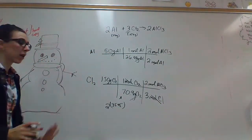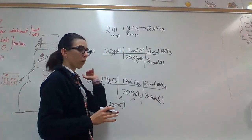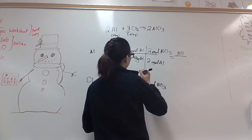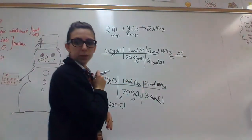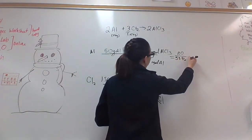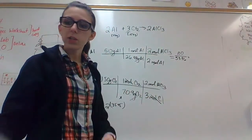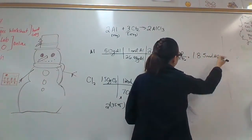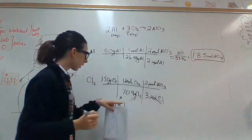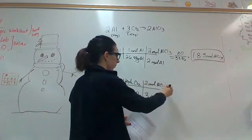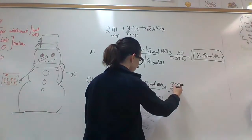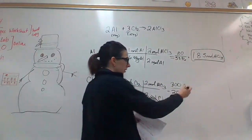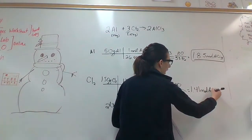So I have two separate equations. For both, I take whatever's on top and multiply it, then divide by the bottom. For aluminum: 100 divided by 53.96 gives 1.85 moles of AlCl3. For chlorine: 150 times two is 300, divided by 70.9 times three which is 212.7. When you divide those, that's 1.41 moles of AlCl3.